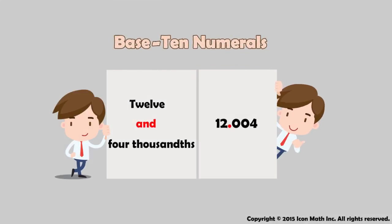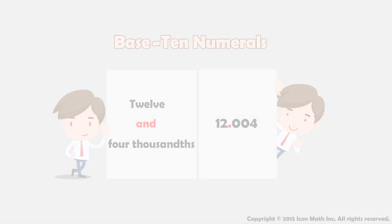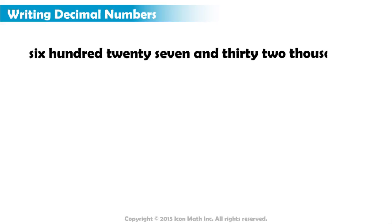Base 10 Numerals. Suppose we have a number expressed in words: six hundred twenty seven and thirty two thousandths. Then, how do we write it in base 10 numerals?